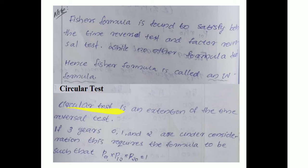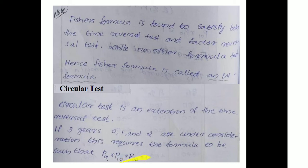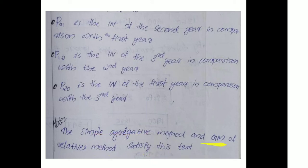The next test is the circular test. The circular test is an extension of the time reversal test. If three years 0, 1, and 2 are under consideration, this requires the formula such that P01 into P12 into P20 equals 1. The simple aggregative method and the geometric mean of the relative method satisfy this test.